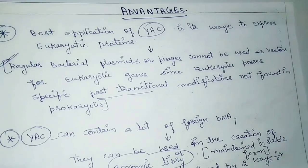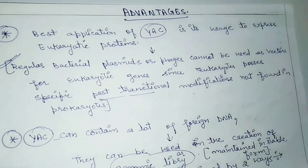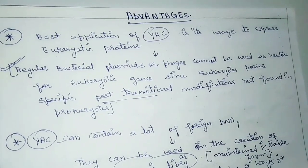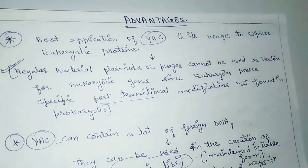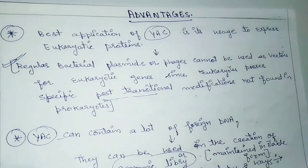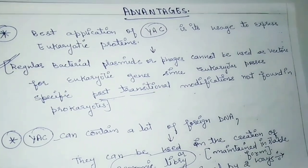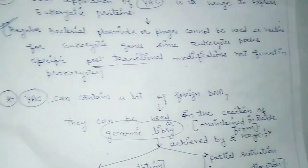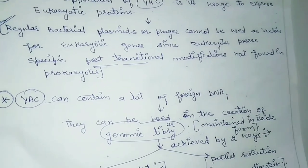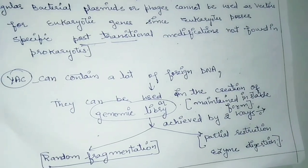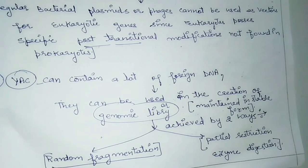The advantage of YAC is that we can express eukaryotic proteins using it. Regular bacterial plasmid or phage cannot be used as a vector for eukaryotic genes, since eukaryotes possess specific post-translational modifications not found in prokaryotes. So eukaryotic proteins are expressed using artificial chromosomes. The second biggest advantage is its use in genomic library creation through random fragmentation or partial restriction enzyme digestion.